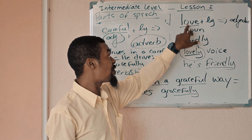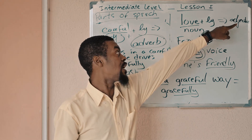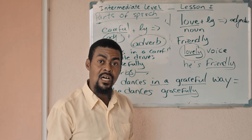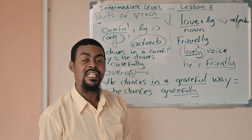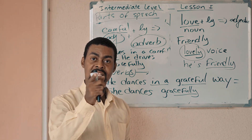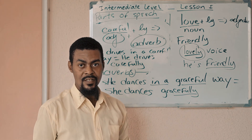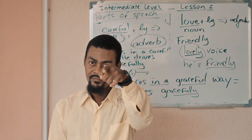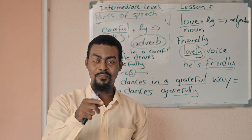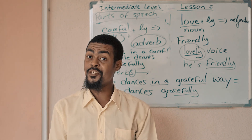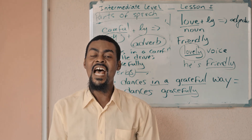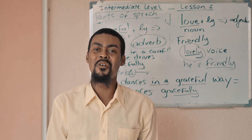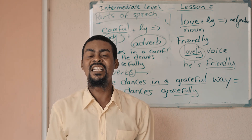Love is a noun plus LY, so it becomes lovely — an adjective. Friend is a noun plus LY, so friendly becomes an adjective, not an adverb. Not every word that ends in LY is an adverb — they may have different parts of speech. Noun plus LY gives you an adjective; adjective plus LY gives you an adverb. And not every word ending in LY is an adverb of manner — we'll be talking about that in the next lesson.